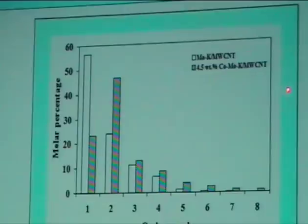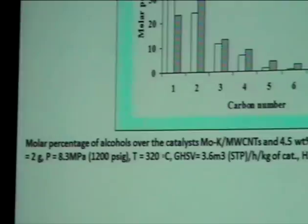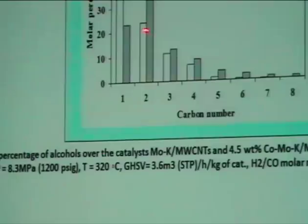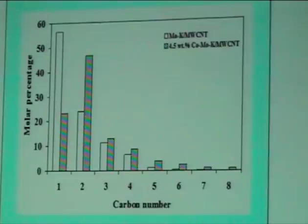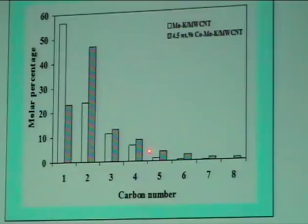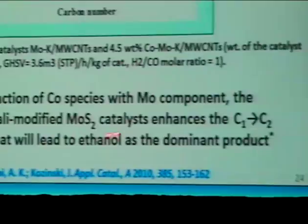Looking at this slide, comparing alkali-promoted molybdenum and 4.5% cobalt-molybdenum, both on multi-wall CNT: without cobalt, we have about 58% methanol and about 22% ethanol. As soon as cobalt is added, there is a clear shift of alcohol distribution toward higher alcohols — C2, C3, C4 — and up to C8 alcohol is produced. This occurs because the strong interaction of cobalt species with molybdenum in the alkali-promoted molybdenum sulfide facilitates the C1-to-C2 homologation step, leading to ethanol as the dominant product.